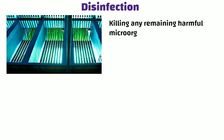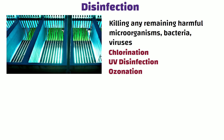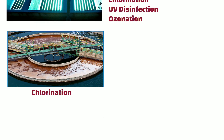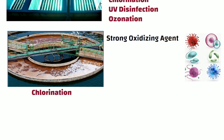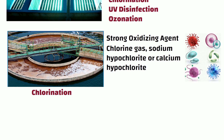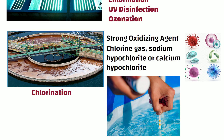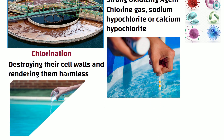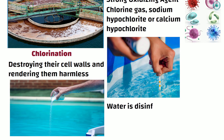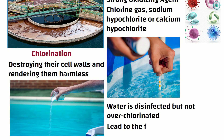Disinfection: this process involves killing any remaining harmful microorganisms, bacteria and viruses after filtration. The most commonly used methods are chlorination, UV disinfection and ozonation. In chlorination, chlorine — a strong oxidizing agent — is added as chlorine gas, sodium hypochlorite or calcium hypochlorite in a controlled manner. The chlorine reacts with microorganisms, destroying their cell walls. The amount of chlorine is carefully controlled to ensure the water is disinfected but not overchlorinated, which can lead to harmful by-products.